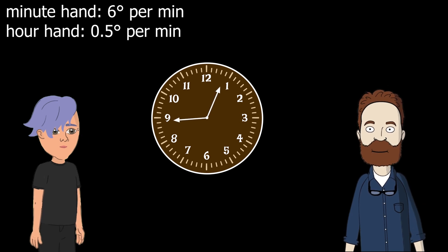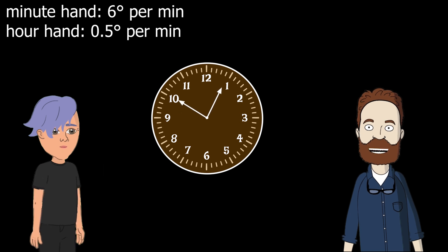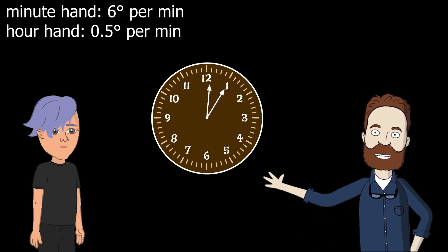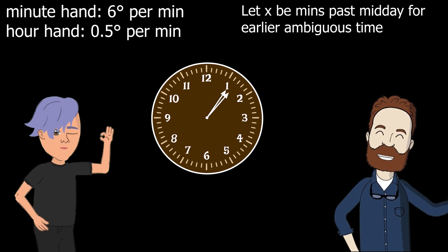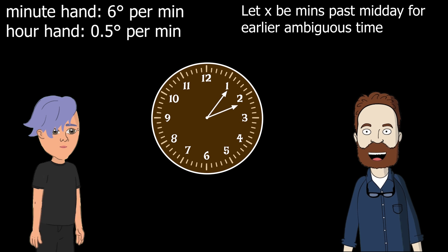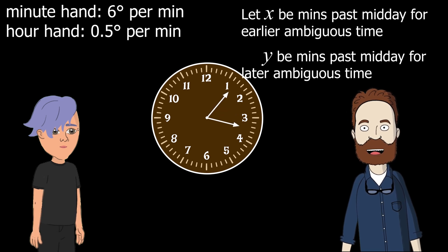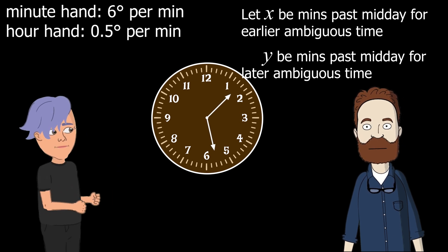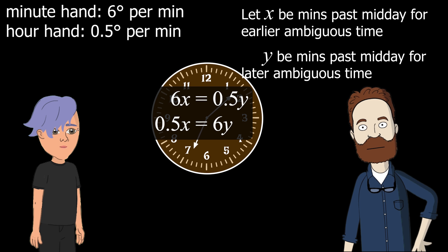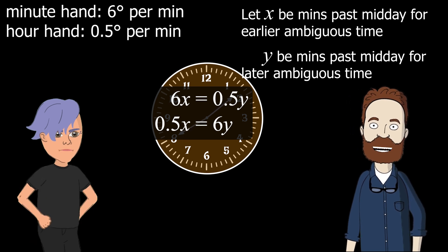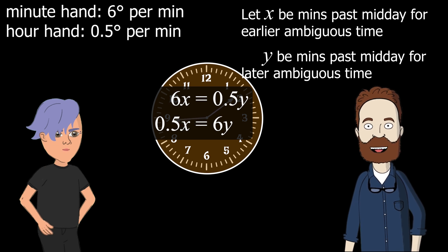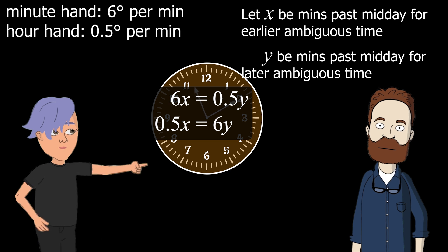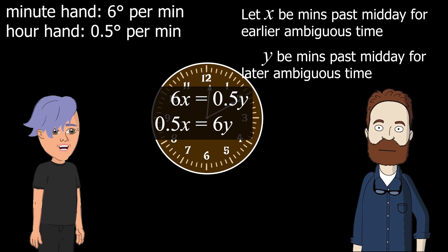So let's define some variables. Let X be the number of minutes past midday for the earlier ambiguous time, and Y be the number of minutes for the later ambiguous time that gives the same clock position. So the minute hand after X minutes should be exactly where the hour hand is after Y minutes, and vice versa. 6X equals half Y, and half X equals 6Y. Something doesn't seem right. Yes, you need to adjust for the fact that one of the hands has already done a full rotation. Y is the later time — it's the minute hand that has gone all the way around, so it should be 0.5X equals 6Y minus 360.